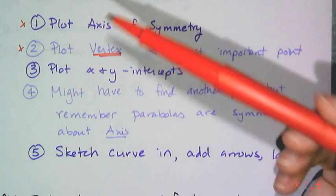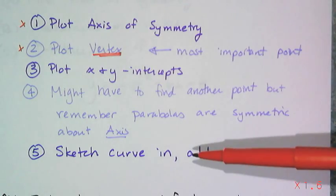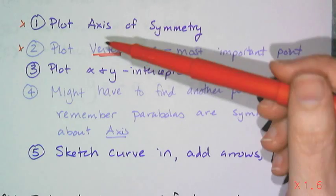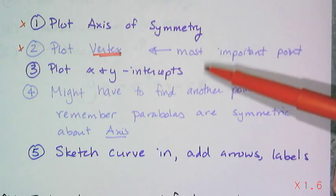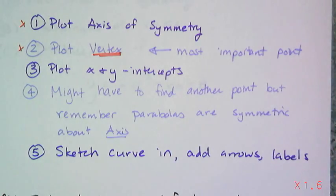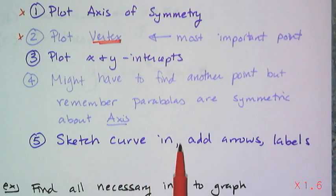But remember always that parabolas are symmetric about their axis of symmetry. So if you find one point, you actually are finding two because you can always reflect it across the axis of symmetry. And then finally, of course, remember to sketch in your curve, add in your arrows, your labels, all that kind of stuff.